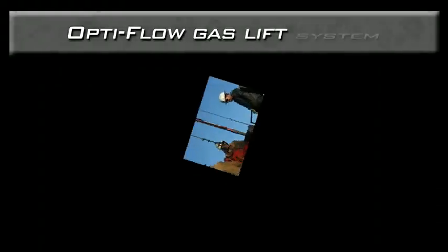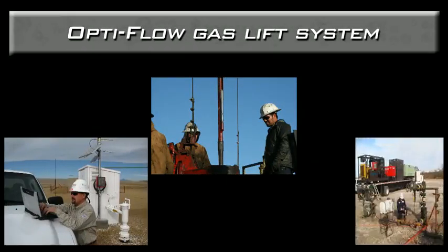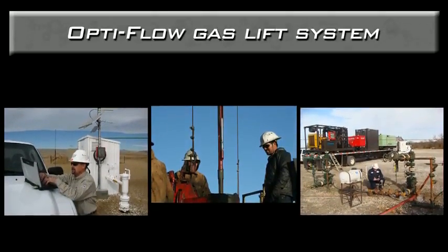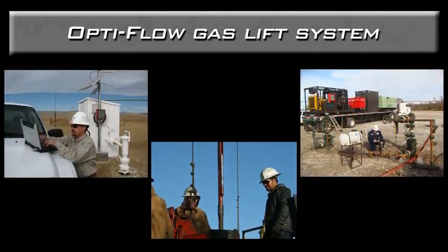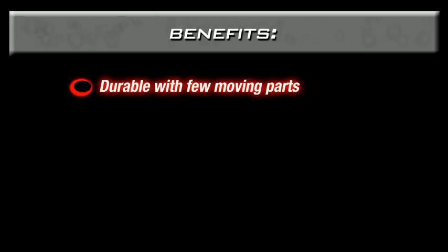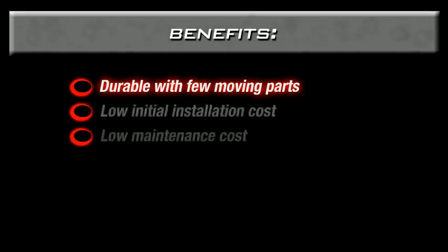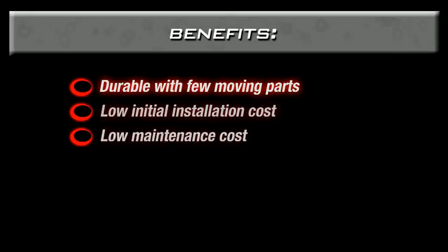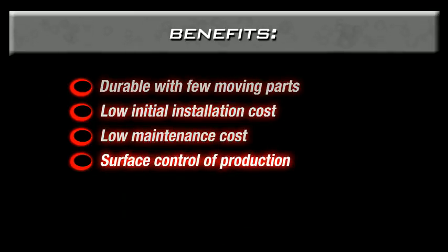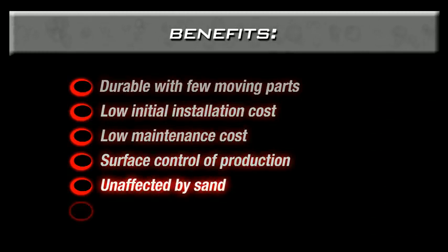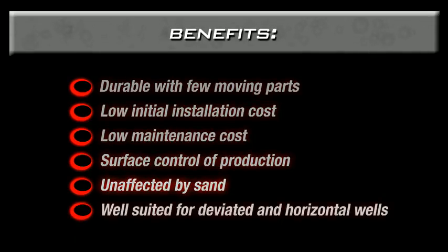The Optiflow gas lift system from PCS is an extremely flexible artificial lift solution that can adapt to the flowing conditions throughout the well's lifespan. Here are a few of the benefits. The system is durable and has few moving parts, giving it a longer life than other forms of artificial lift. Initial installation and maintenance costs are economical. The operator can control production rates from the surface. The system is largely unaffected by produced sand, and it is effective in a variety of well configurations, including deviated and horizontal wells.